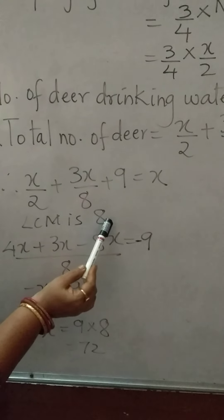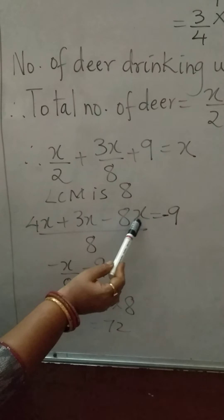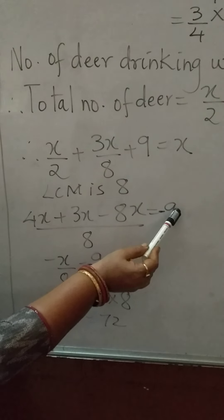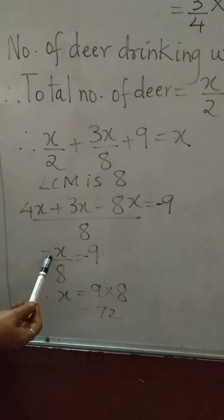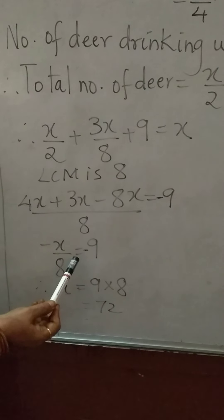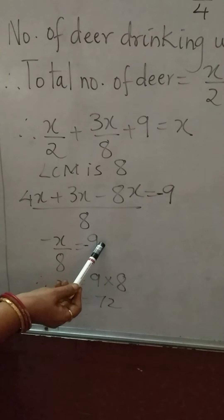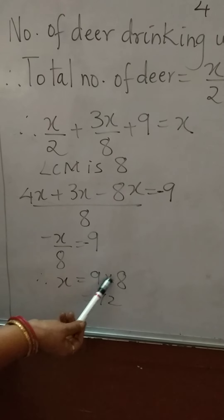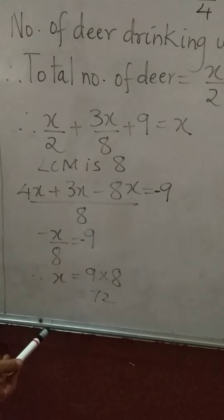And LCM is 8. So 4x plus 3x minus 8x equal to minus 72. So minus x upon 8 is equal to minus 9. So x equal to 72. Write the answer.